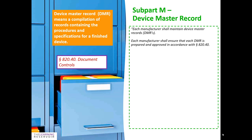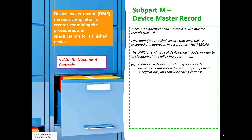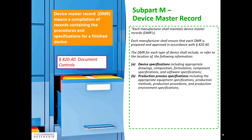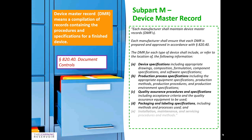§820.40 is our document controls requirement in 21 CFR Part 820. What it's saying is that they want you to have your device master records containing procedures and specifications that relate to the finished device, and those procedures and specifications must be written in accordance with the requirements within §820.40. The DMR for each type of device should include or refer to the location of device specifications, production process specifications, quality assurance procedures and specifications, packaging and labeling specifications, and installation, maintenance, and servicing specifications. All those procedures and specifications that relate to the finished device form your device master record, and a medical device manufacturing facility has to have that in place.